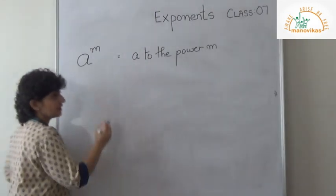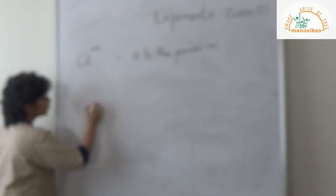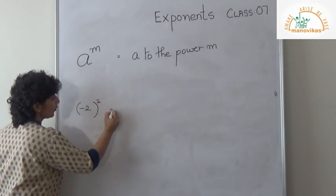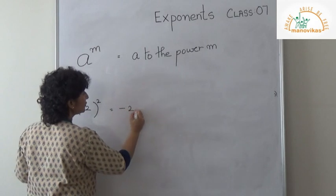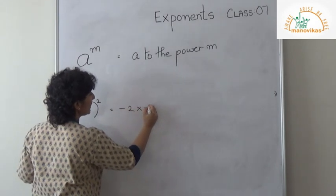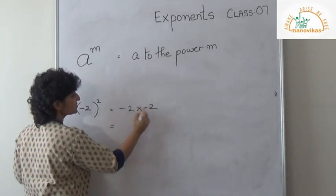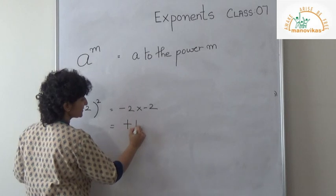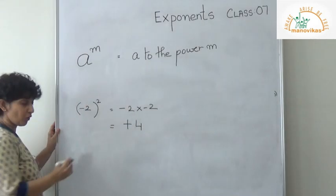Now if I have minus 2 squared, what would you do? It is minus 2 into minus 2. Minus into minus gives plus, and 2 twos are 4.